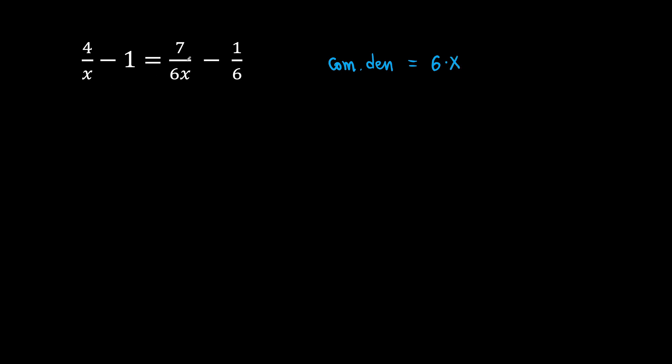So we can get rid of x and 6x at the same time. Our common denominator is 6x. Then this is what we are going to do. We are going to multiply both sides of the equation by 6x over 1, and we will get rid of x and 6x and 6 in the denominator.